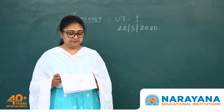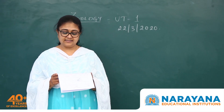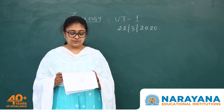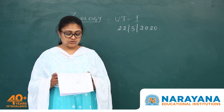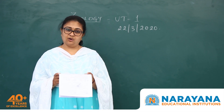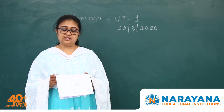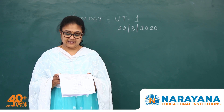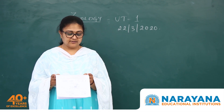Question 139: identify the types of organisms marked as A, B, and C based on their response to fluctuating environmental conditions. Looking at the graph in the question paper, line A refers to conformers — 99% of animals and nearly all plants are conformers. Line B is for regulators, applicable to mammals and birds. Line C indicates partial regulators, which correctly matches with camels. So the first option is correct.